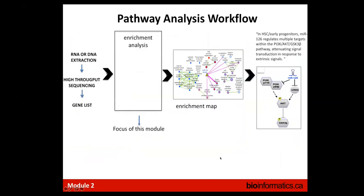When we have these two elements we can perform pathway enrichment analysis, looking for over-enrichment of a pathway in our gene list. This slide represents the analysis workflow. Usually our end goal is to find a defined pathway that was activated or inhibited in our experimental model — here we see the PI3K-AKT pathway — but before that we extract it from a more global picture, an enrichment map with many significantly enriched pathways.